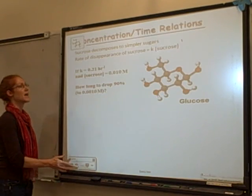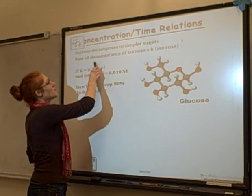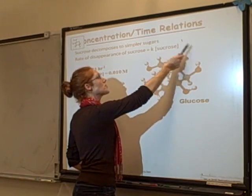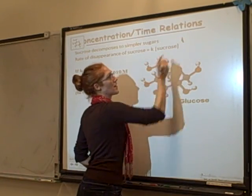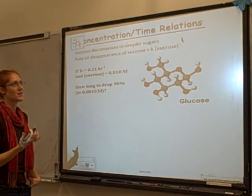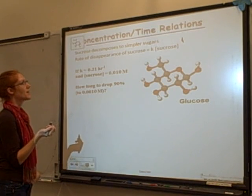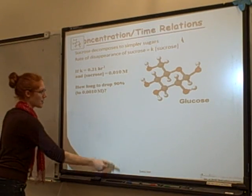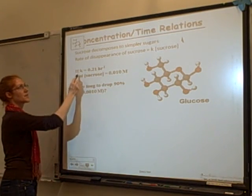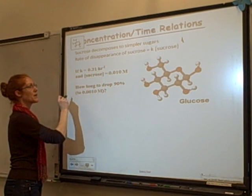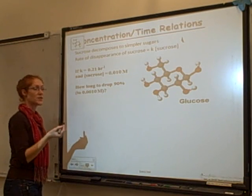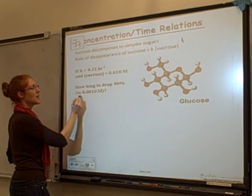So let's try one of these out. I have rate of disappearance of sucrose equals K times the concentration of sucrose. There's no order written here. So it's first order. I actually wrote a one there and left it there. But if there's no order written, it's first order. It's the same as having it to the power of one. So I know it's first order. I'm given a K constant. I'm given a concentration of sucrose. K constant equals 0.21 per hour. Concentration of sucrose equals 0.01 molar. And the question is, how long will it take for the concentration to drop 90% to 0.001?